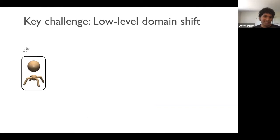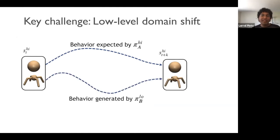So the reason for this is a low-level domain shift. And what this means is that when the high-level outputs a sub-goal, it expects a certain behavior from the low-level. However, when you transfer the high-level from one agent to another agent, the behavior generated by the low-level may not be the same. And when the behavior generated by agent B's low-level is not the same as agent A's low-level, it brings the high-level of agent A out of distribution. So the big question over here is how can we align the low levels of agent B to the low level of agent A?